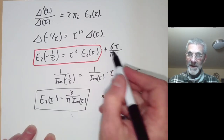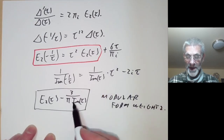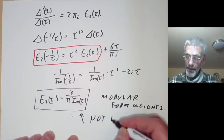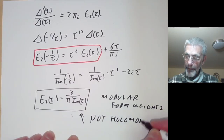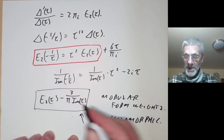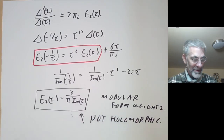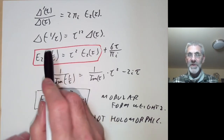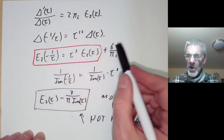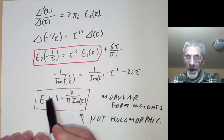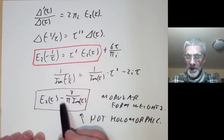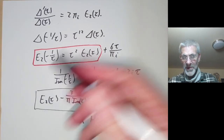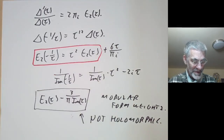The fudge factor in the transformation cancels out with the fudge factor here. The trouble is this modified form is not holomorphic, because of the factor 1/Im(τ). So we have a choice of evils: we can have a function that is holomorphic but not quite a modular form of weight 2, or a function that transforms like a modular form of weight 2 but is not holomorphic. We can't have both properties at once.